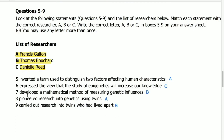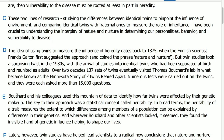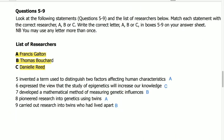Questions 5 to 9: look at the following statements and the list of researchers below. Match each statement with the correct researcher — A, B, or C. Statement 5: invented a term used to distinguish two factors affecting human characteristics. Its answer is in paragraph D, first line: the idea of using twins to measure the influence of heritage dates back to 1875, when English scientist Francis Galton first suggested the approach and coined the phrase 'nature and nurture.' So its answer is A.